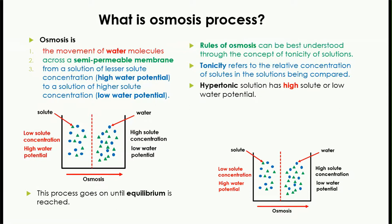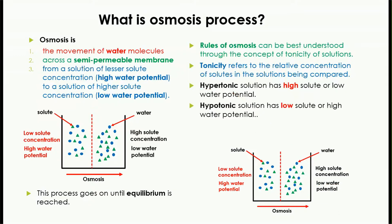There are three different terminologies used in this case. The first one is hypertonic solution. In daily life, we say a person is very hyper — hyper means that person is very active, which means too much energy. Similarly, a hypertonic solution has too much solute, meaning it contains high solute concentration and low water potential. In this diagram, this part has high solute concentration and low water potential, meaning this part is actually the hypertonic solution compared to the other solution.